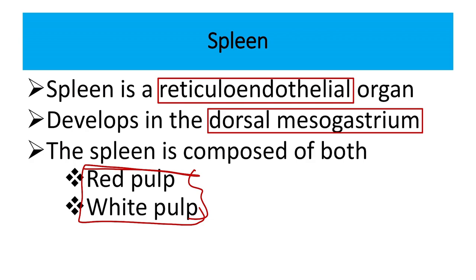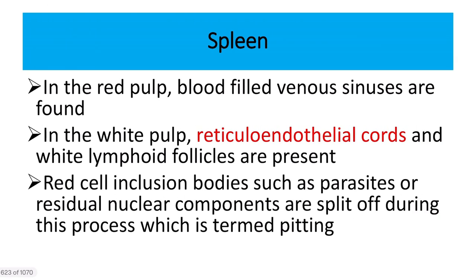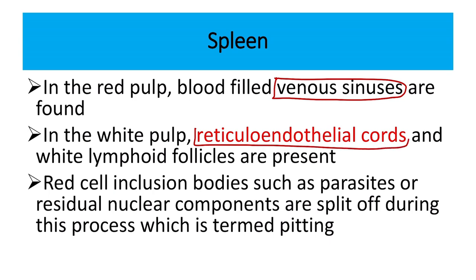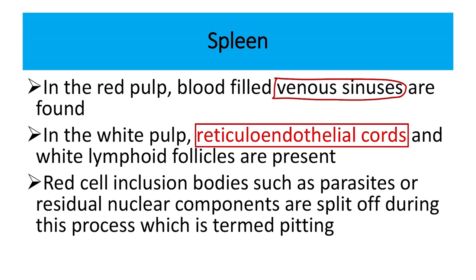The red area is the red pulp and the white area is the white pulp. The red pulp is filled with venous sinuses. The white pulp contains the reticuloendothelial system, which is the defensive part, located in the white lymphoid follicle area. On the other hand, red cell inclusions are present in the red pulp.